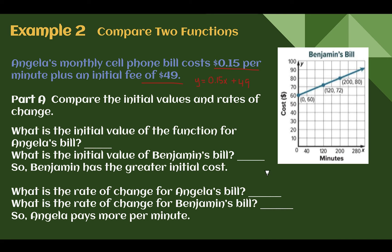So, first, in part A, let's compare our initial values and rates of change. It told us the initial value for Angela's bill was $49.00. If we're trying to find the same thing for Benjamin's bill, the initial value is the same as the Y-intercept. So, where does it cross the Y-axis or when there's zero minutes? So, zero minutes had $60.00. Benjamin has the greatest initial cost.